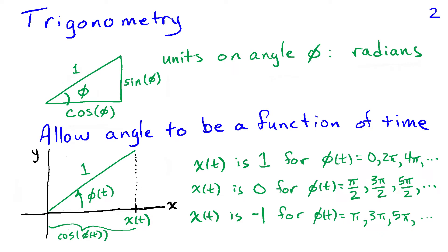To get to the idea of a sinusoid, what we're going to do is let this angle vary with time. That means the hypotenuse is rotating with respect to the two axes. This hasn't changed the geometry at all — the horizontal leg remains cosine of this angle. But now the angle is a function of t, so we can think of x(t) as cosine of phi(t).